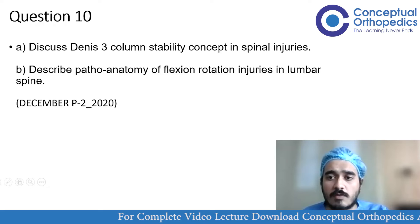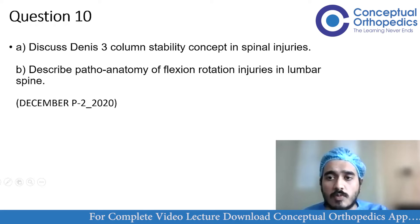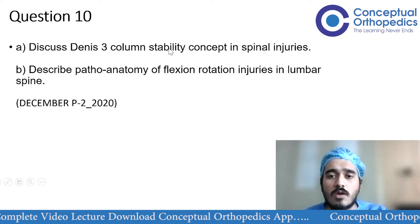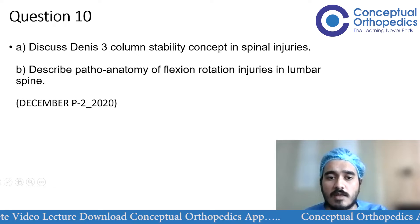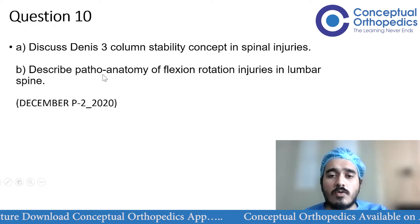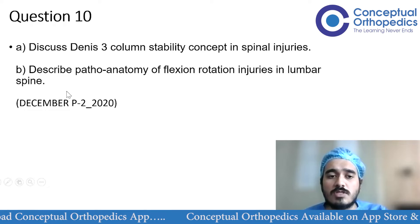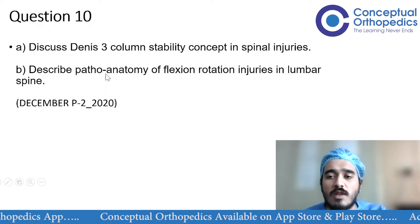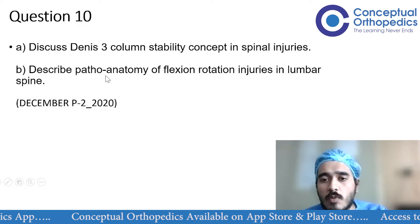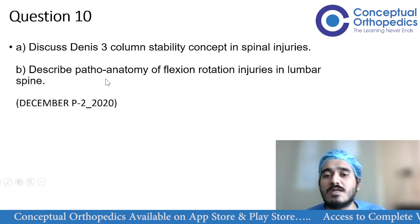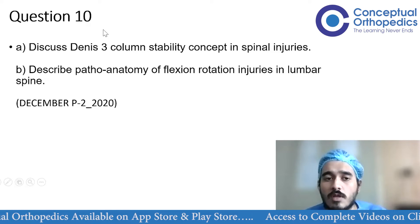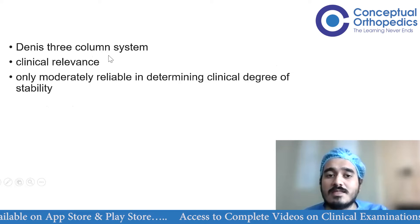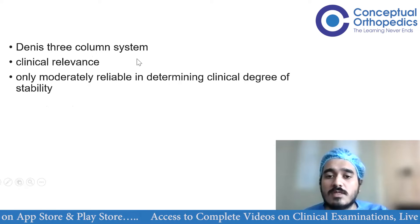This question was asked in December 2020. The first part asks to discuss Dennis's three column stability in spinal injuries, and the second part asks to describe the pathoanatomy of flexion rotation injuries in the lumbar spine. Since it's two questions, it should generally be divided equally, though examiners sometimes divide marks on their own.